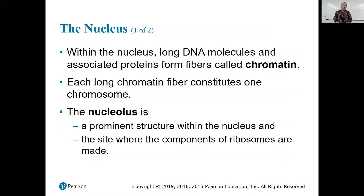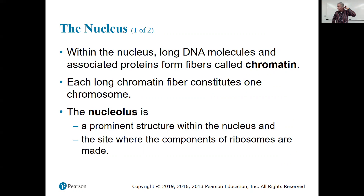For a chimpanzee it would be 48, an onion would be 60, and a fruit fly would be 4. It's always even because you get the same number of chromosomes from both parents.